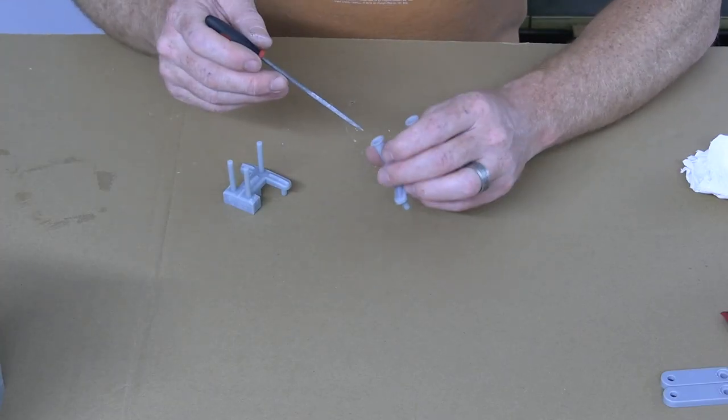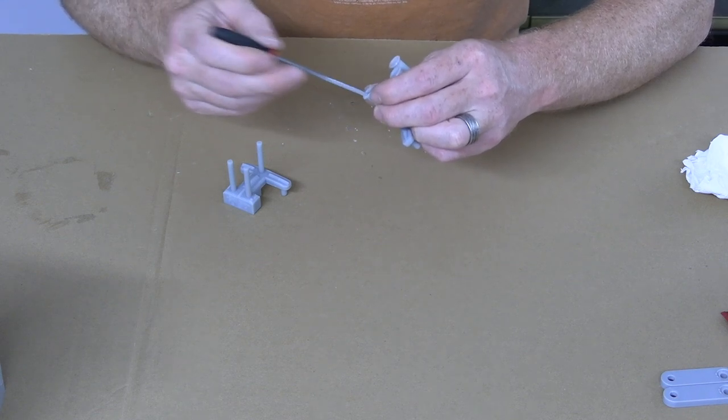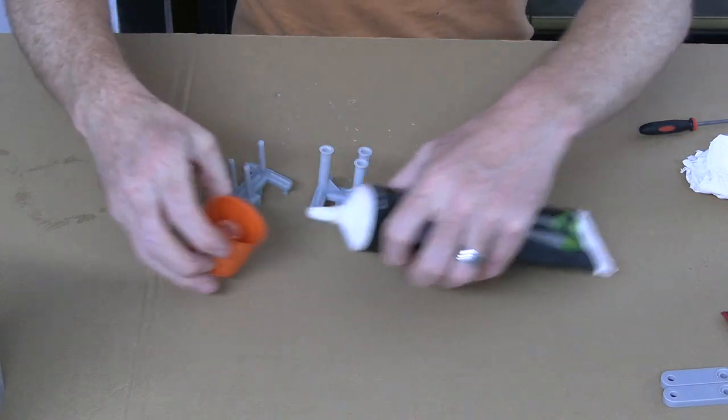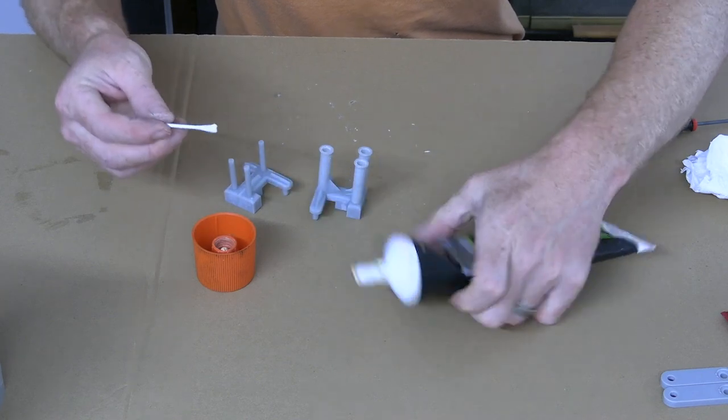Before we build the inner part of the tower, we're going to assemble the spring stop. While not completely necessary, if you do have a small file, you can use it to clean up the inside edges. We're also going to add a small amount of grease to the inside of each of these three holes. You can use a Q-tip to make this process easier.